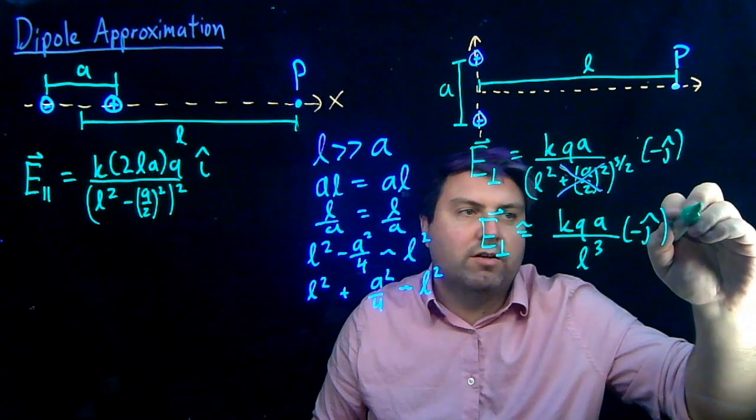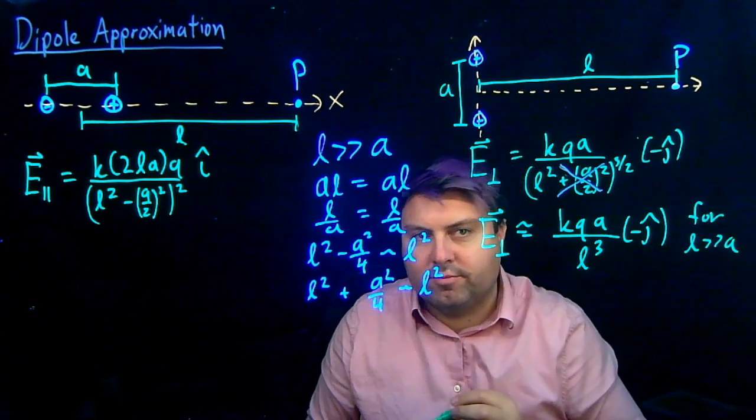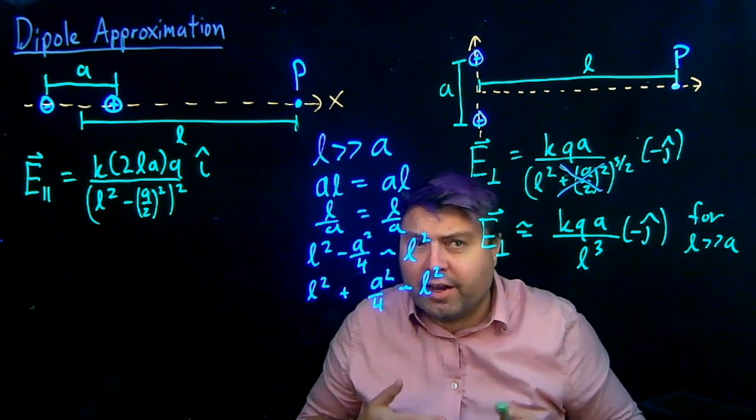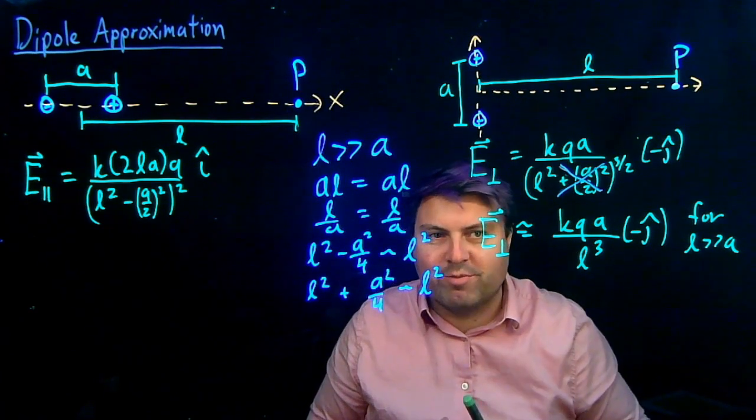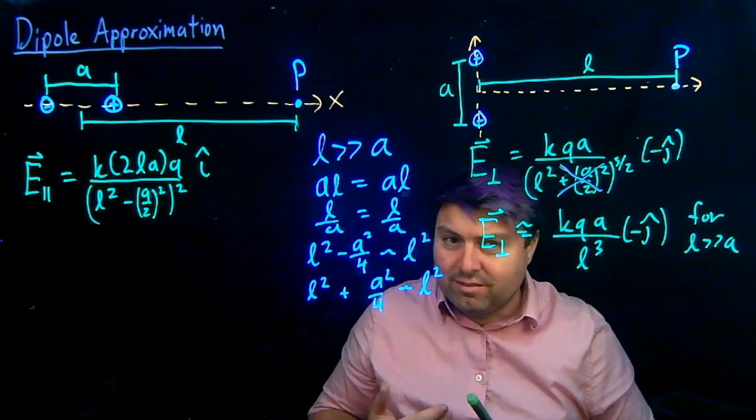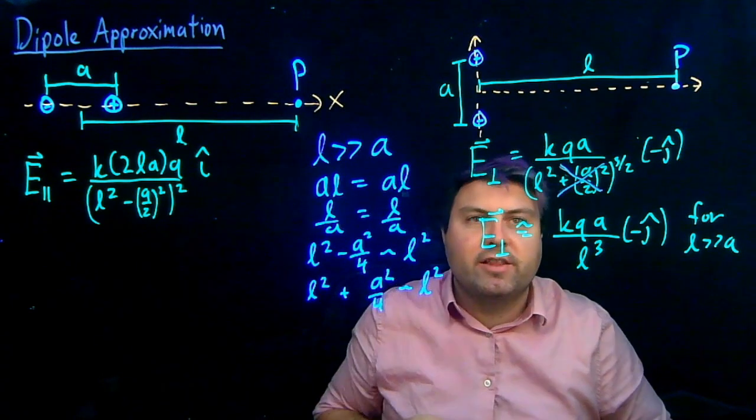And we'll use this, right, for L much, much larger than A. So, if L and A are on the same order of magnitude, same scale, we can't use this approximation, but if it's the dipole approximation where L is much larger than A, then we can have this.